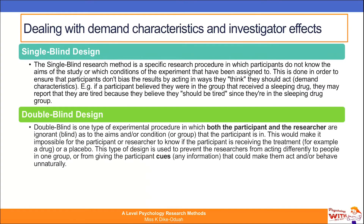In a double blind design, both the participant and the researcher are ignorant or blind to the aims or the conditions participants have been allocated to. This makes it impossible for either to know if the participant is receiving the treatment — for example, in a drug trial comparing a real drug versus a placebo. This is really beneficial because it prevents or minimises investigator effects, particularly interpretative bias, and also minimises demand characteristics for participants unaware of their condition.